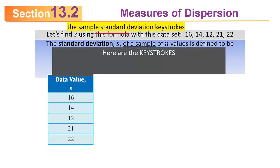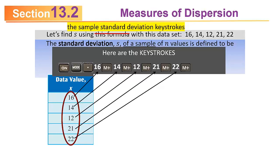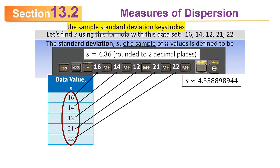In this particular case, the keystrokes will be: on to clear the old data and wake the calculator up, mode period to put it in stats mode. Then enter each data point followed by M plus. Don't forget M plus after the 22. Then do shift 9. If you look in your calculator display, you'll see 4.358898944. Round that to two decimal places, you get 4.36.